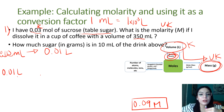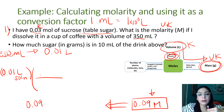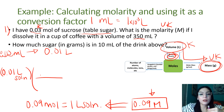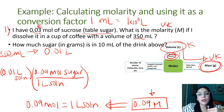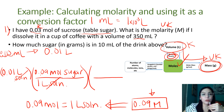Starting with 0.01 liter of solution, we need to use molarity as a conversion factor to get to moles. We rewrite molarity as a unit equation: 0.09 mol sugar per 1 liter solution. Now that we have moles, we need to go to mass, so we need the molar mass of sucrose.